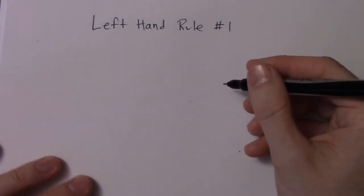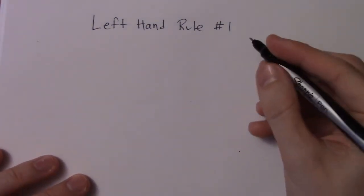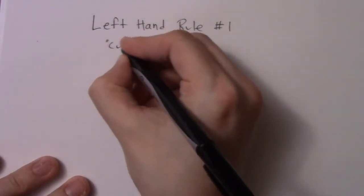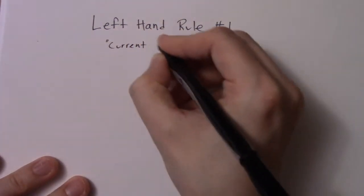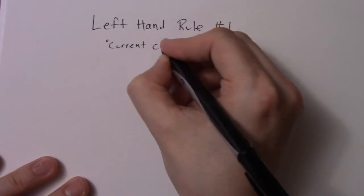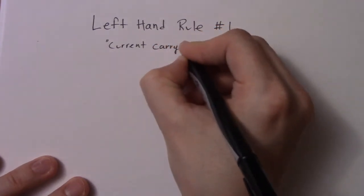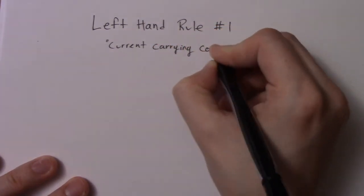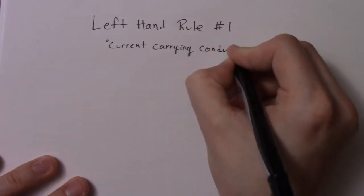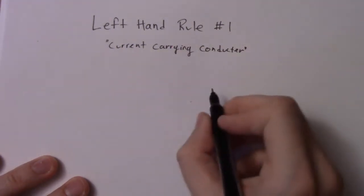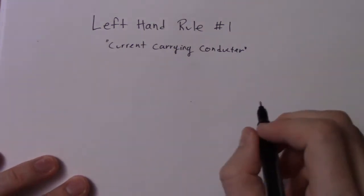So, left-hand rule number one is basically for a current carrying conductor, something we should call a wire. Physics people just want to sound smart, and that's probably supposed to be another letter, but anyway.